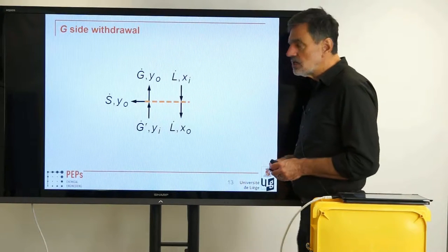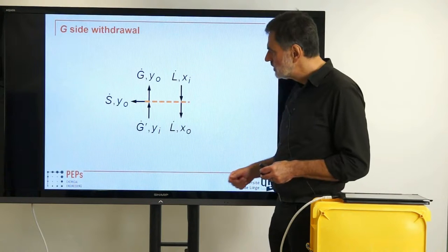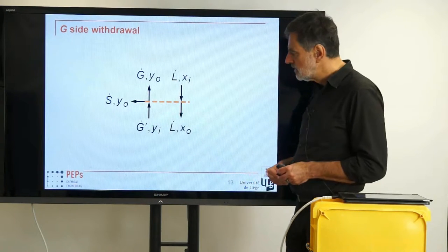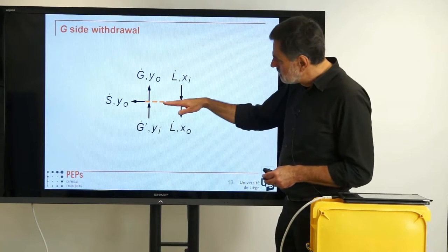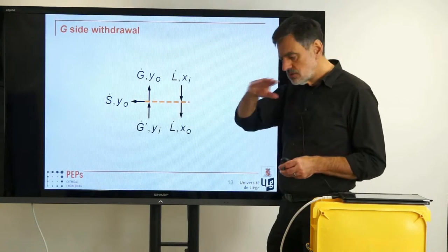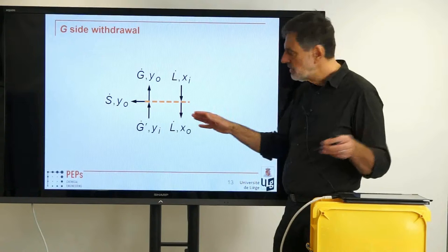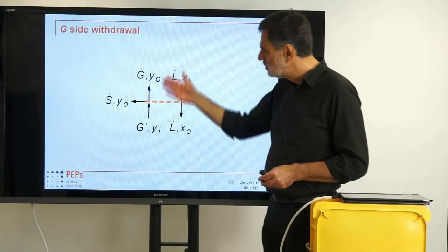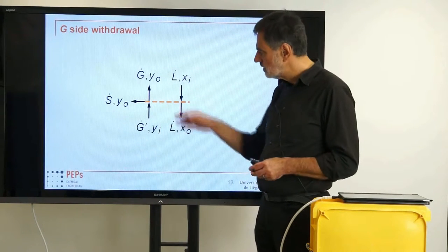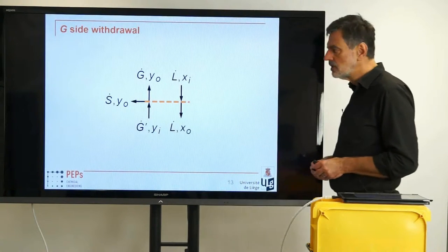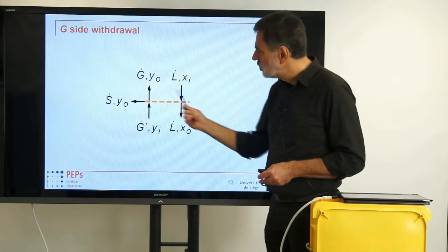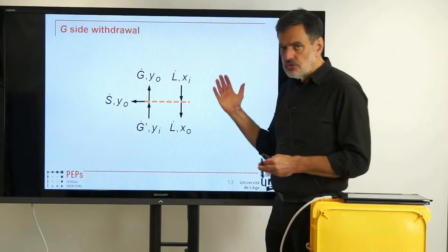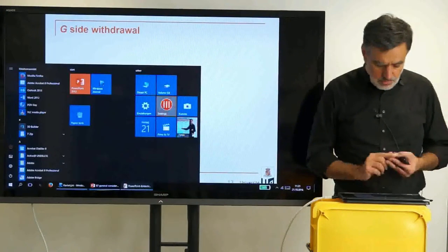The second case is a side withdrawal from the G-dot stream. Now the L-dot remains unchanged, but the G-dot changes from G-dot prime below to G-dot above, with S-dot withdrawn to the side. Again, we have our control plane — just a mentally horizontal plane, infinitely thin, no storage capacity, nothing that can accumulate there — which means XI and XO are again identical, and YI and YO are identical as well. It is also not related to anything like a theoretical stage. We have above the slope L-dot over G-dot and below the slope L-dot over G-dot prime.